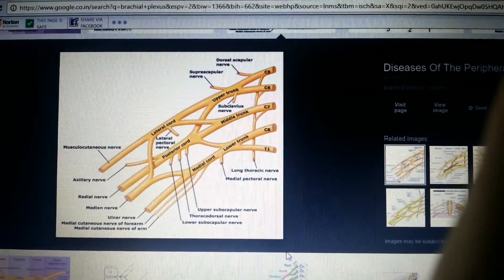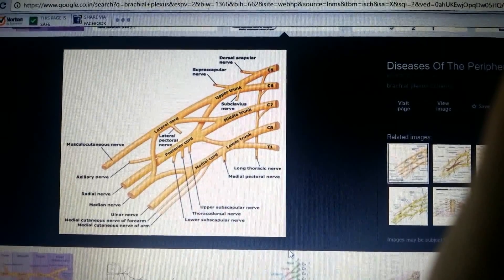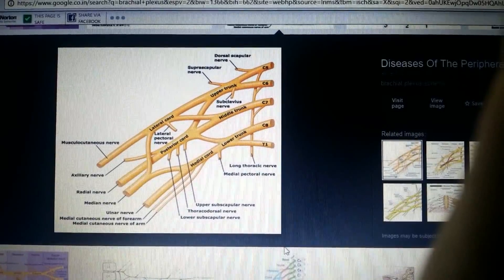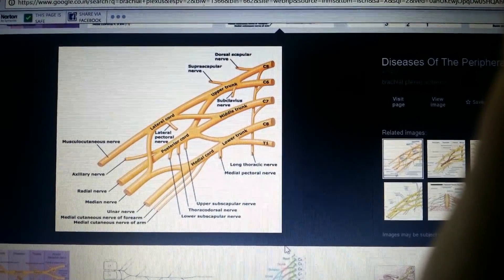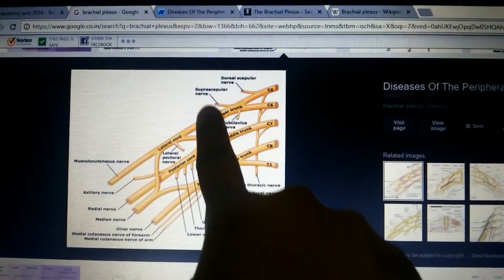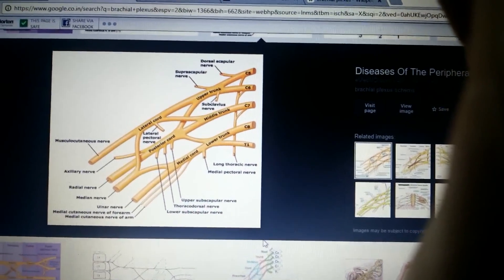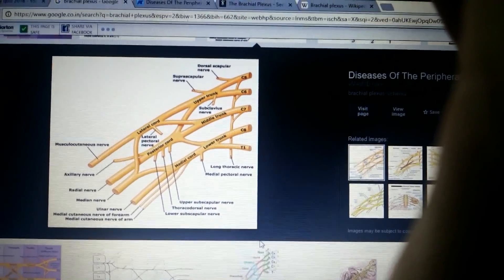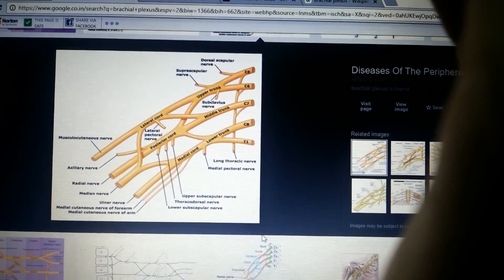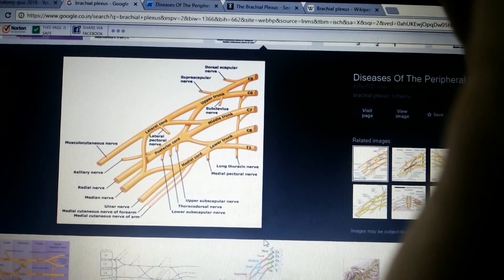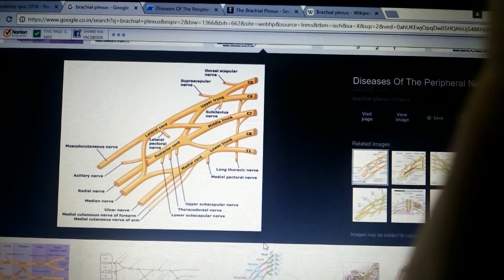The trunks are divided into divisions: anterior division and posterior division. All the posterior divisions combine to form the posterior cord. The anterior divisions of upper and middle trunk combine to form lateral cord, whereas the anterior division of lower trunk continues to form medial cord.